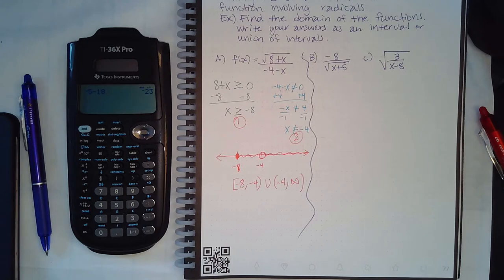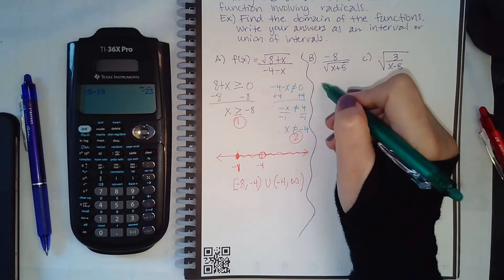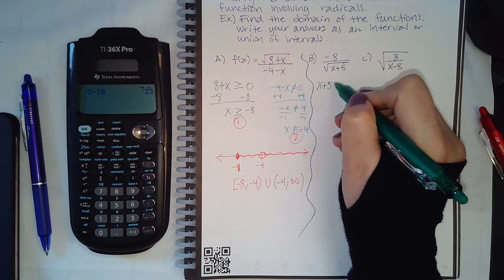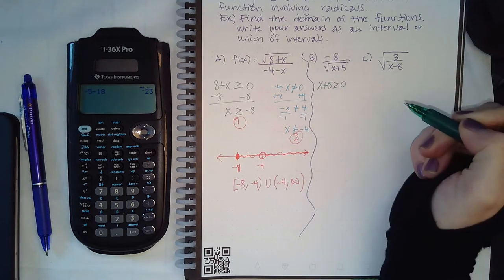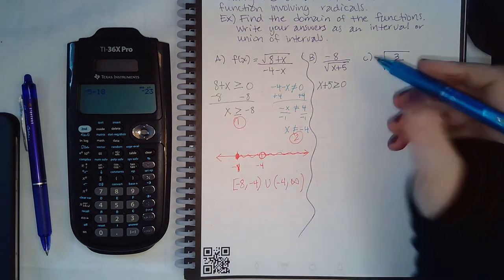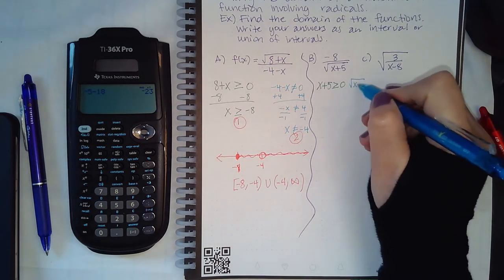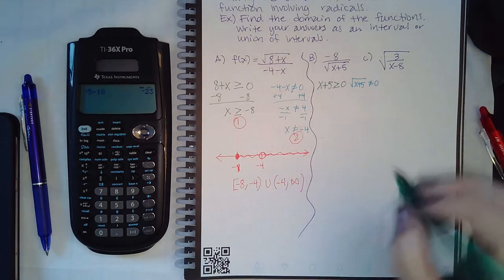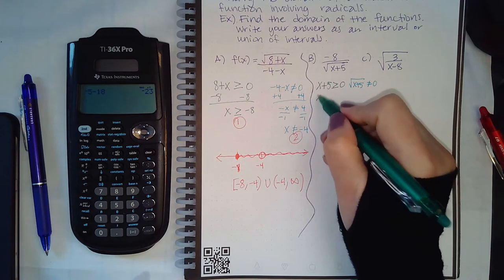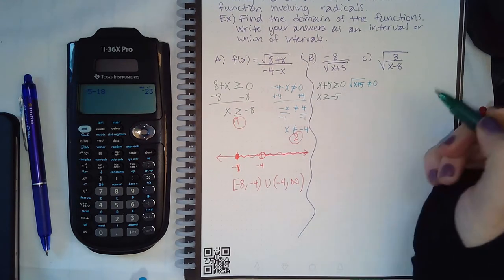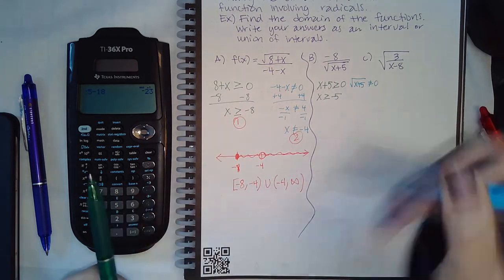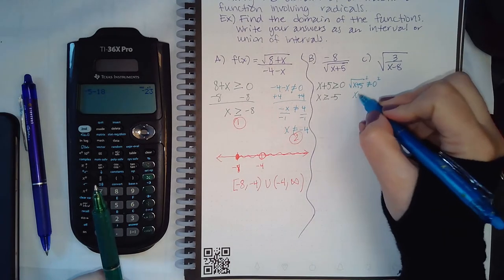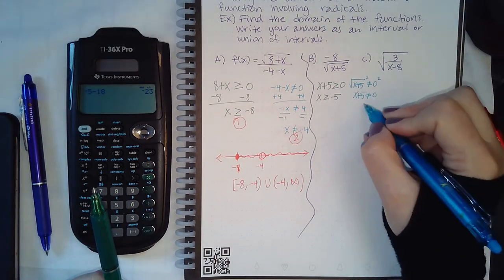Second one is a different situation. The second one has the radical in the denominator. So I know that what's inside the denominator has to be greater than or equal to zero. I also know that the denominator itself cannot equal zero. So same thing as before. Now here I'm going to minus over and I get x cannot equal negative five.